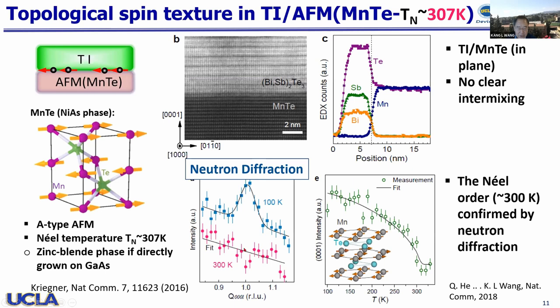The neutron diffraction peak shows the Néel temperature is roughly about 307 K. We use this material because the Néel temperature is near room temperature, so we can field-cool above the Néel temperature to freeze out the interface spin if possible. That's what we tried to do.